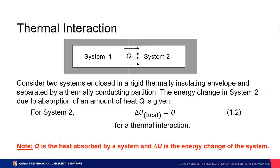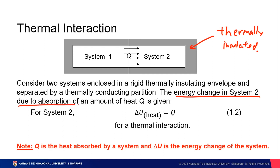Let's look at thermal interaction. Consider two systems in a thermally insulating envelope — that means system one and system two do not take in or give out heat to their surroundings. We can describe the energy change in system two due to absorption of the amount of heat Q. We usually describe heat as Q, and U is the energy change of a system.